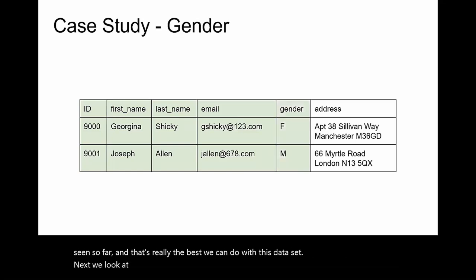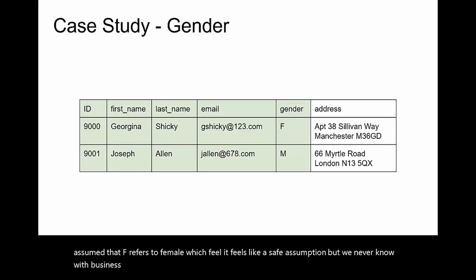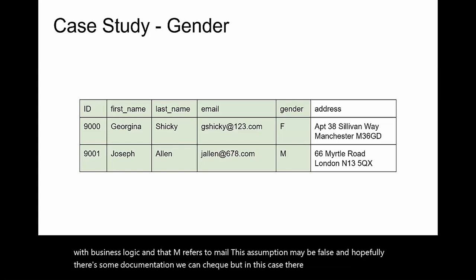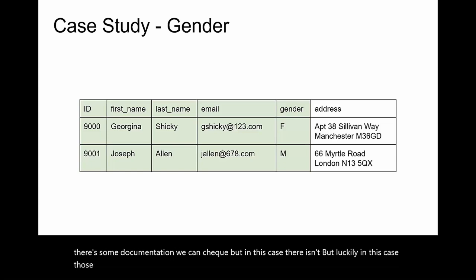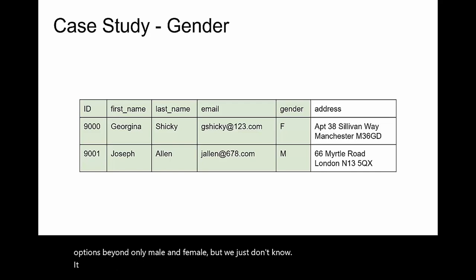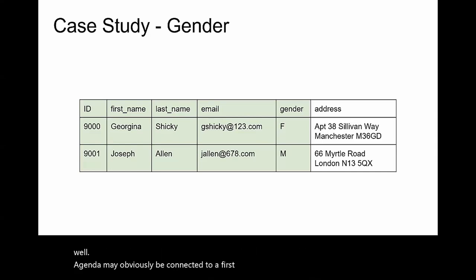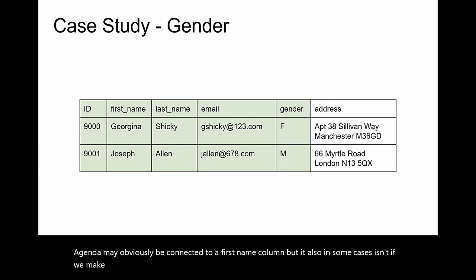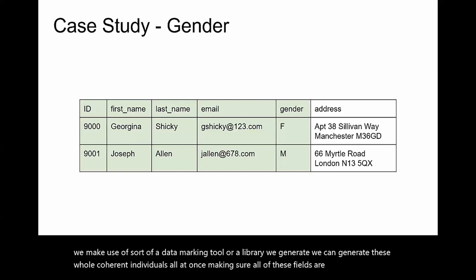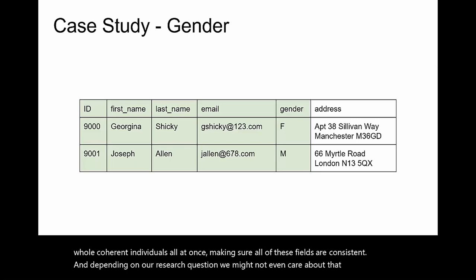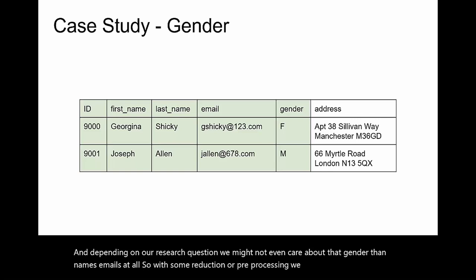Next we look at the gender column. We've made some big assumptions — we've assumed F refers to female, which feels safe, and that M refers to male, but we never know with business logic. Hopefully there's some documentation we can check, but in this case there isn't. Luckily those genders appear to correspond with the names provided. There may also be options beyond only male and female, but we just don't know. It's possible that after our synthesis of a new name it could have contradicted these genders. If we use a data masking tool or library, we can generate whole coherent individuals all at once, making sure all fields are consistent.